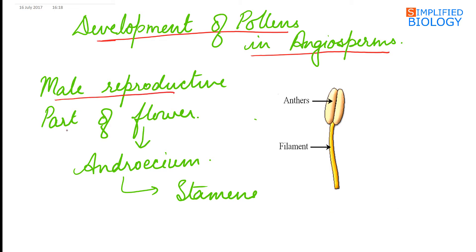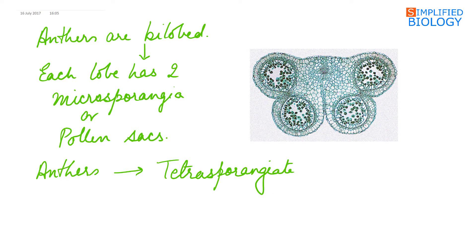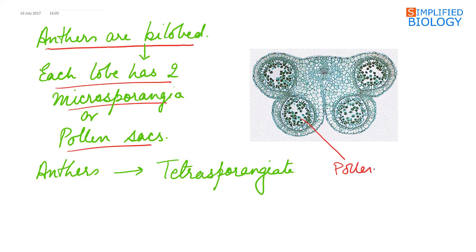The male reproductive part of the flower is the androecium, which is made up of stamens. A stamen consists of two anther lobes joined to each other by a connective and a filament. Anthers are bilobed; each lobe has two microsporangia or pollen sacs. Hence, the anthers in angiosperms are tetrasporangiate, that is, having four microsporangia.